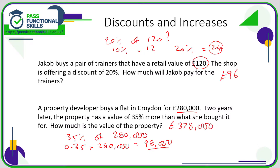If you're comfortable with percentage increases, since this is increased by 35%, instead of working out 35% and adding it on using the multiplier 0.35, you can use the multiplier for a percentage increase, which is adding 1 to the basic percentage multiplier. So instead of 0.35, multiply by 1.35 to go directly to the final answer of £378,000. If you're not sure on these percentage multipliers, go back and have a look in the revision section on percentages.